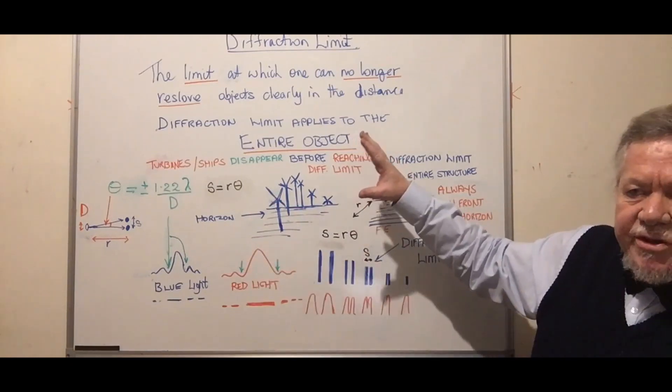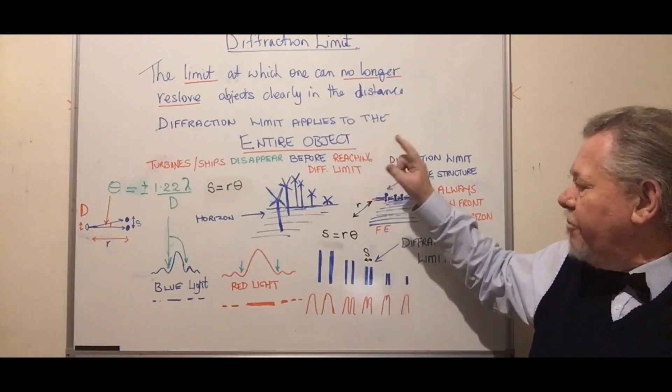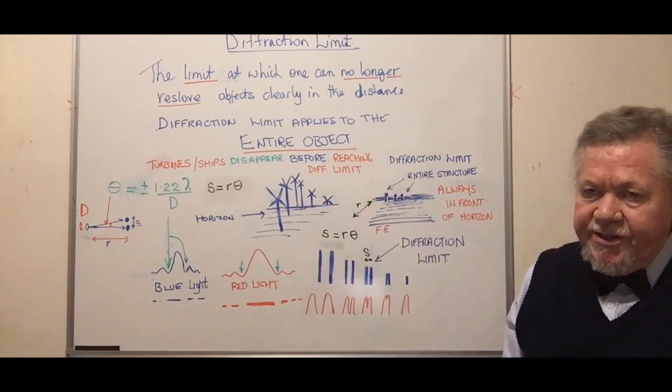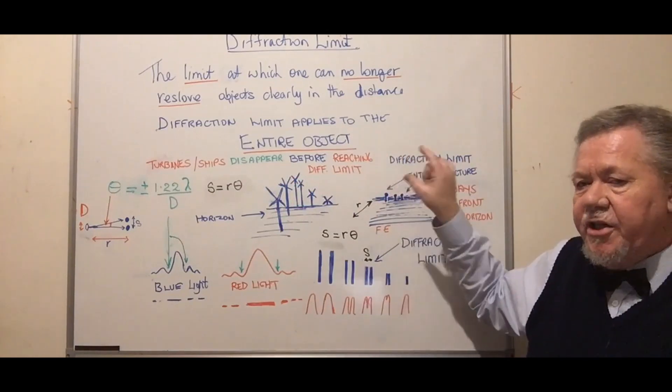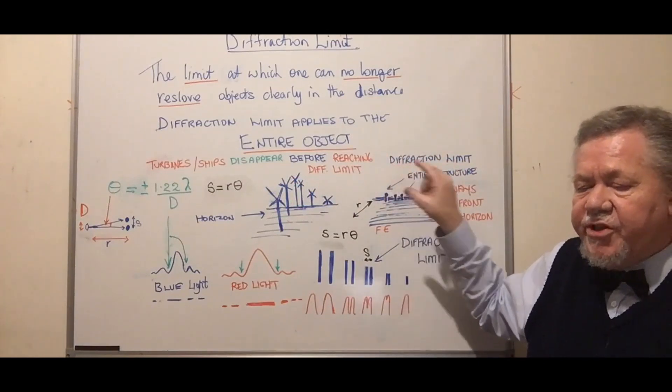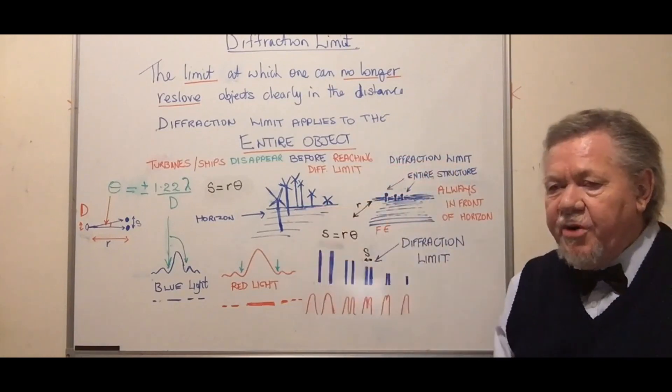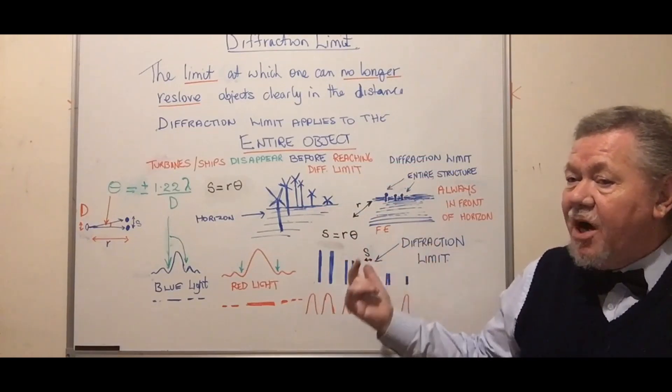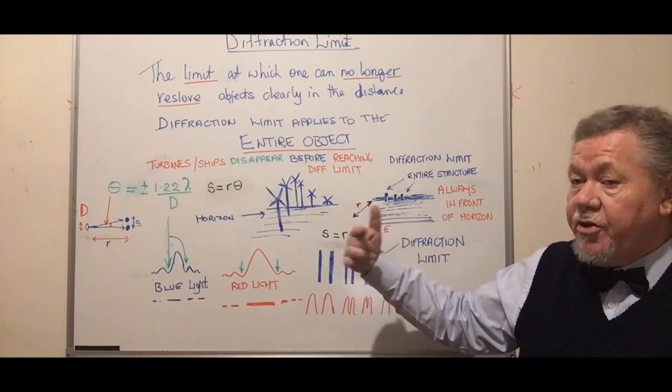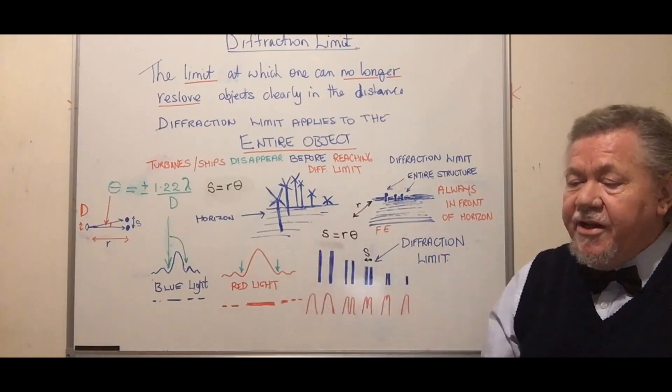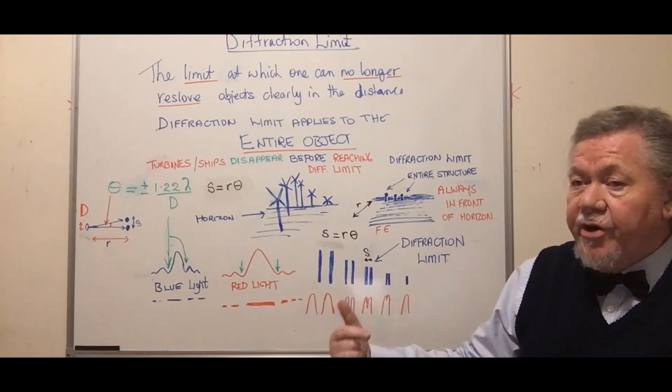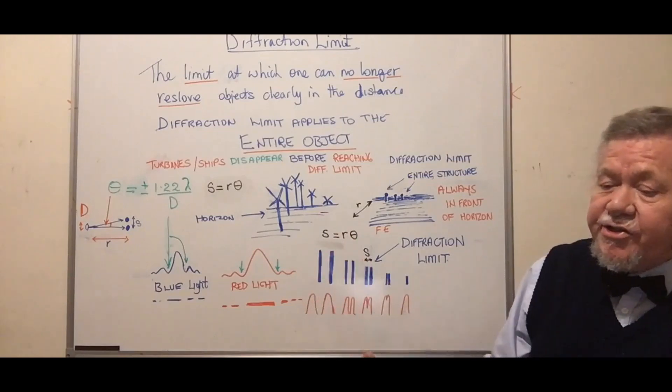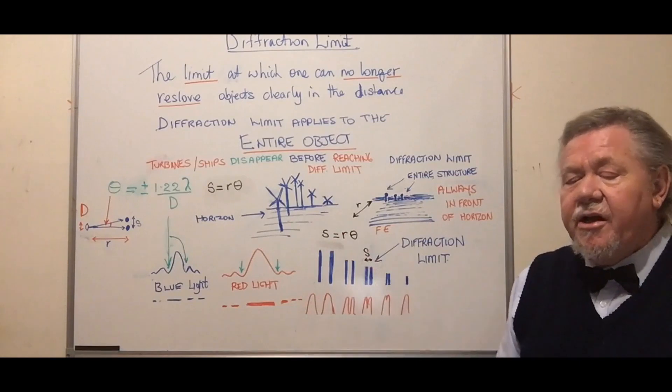Let me reiterate my main point: the turbines and ships disappear before there's any chance these objects would reach the diffraction limit. When ships are going over the horizon, you can see the ship properly - the mast, the bridge, all sorts of features. Diffraction limit is not obscuring those parts. As the ship goes below the horizon, you can continue to see these details all the way until the ship is completely not visible.